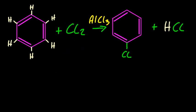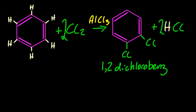So what if I add a bit more chlorine? Well, I would make a dichlorobenzene. I can make 1,2-dichlorobenzene or the isomer 1,3-dichlorobenzene.